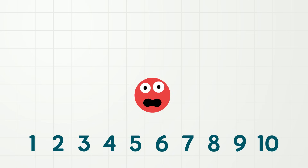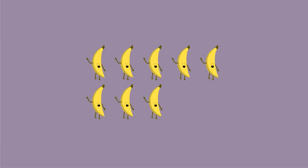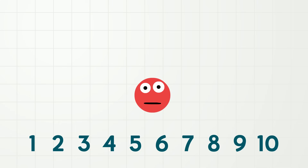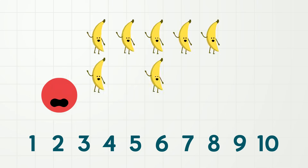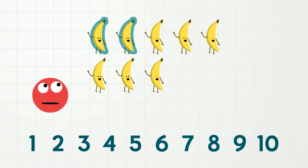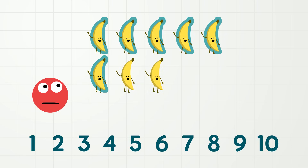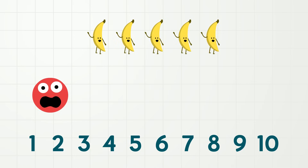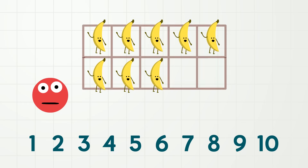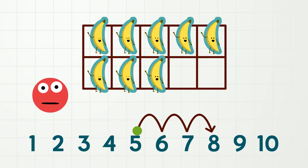Let us do some estimating one last time with a different number of bananas. Ready? Here we go! So, what was your estimate of how many bananas there were? Let's count to find out! 1, 2, 3, 4, 5, 6, 7, 8 bananas! Remember that 5 bananas look like this. So, if we add 3 more, we know that 5 plus 3 is 8.